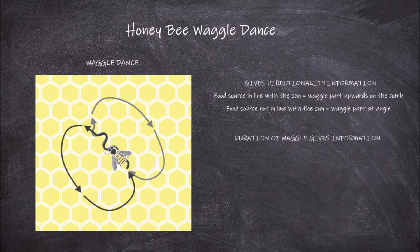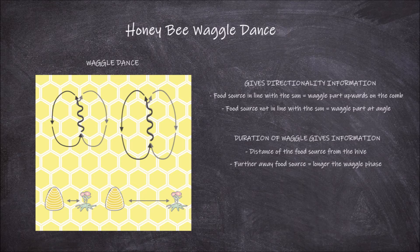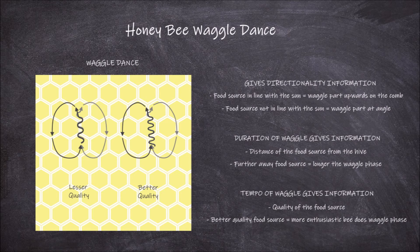The duration of the waggle phase gives information on the distance of the food source from the hive. The further away the food source, the longer the waggle phase will be. The dance tempo of the waggle section — so how rapid it wiggles its abdomen — gives information on the quality of the food source. The better quality of the food source, the more enthusiastic a bee will do this waggle portion, to try to convince the other bees to go to their food source versus others also doing waggle dances in the hive.